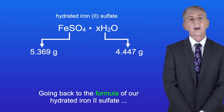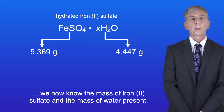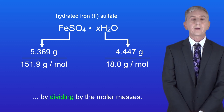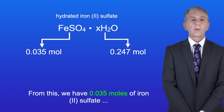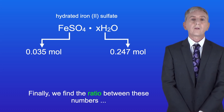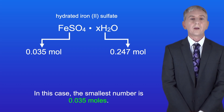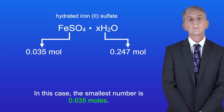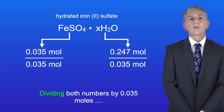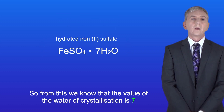The mass of water lost must have been 4.447 grams. We now know the mass of iron(II) sulfate and mass of water present, so we calculate the number of moles of each by dividing by the molar masses. This gives 0.035 moles of iron(II) sulfate and 0.247 moles of water. Dividing both by the smallest number — 0.035 moles — gives a ratio of 1 iron(II) sulfate to 7 water. So the value of the water of crystallization x is 7.